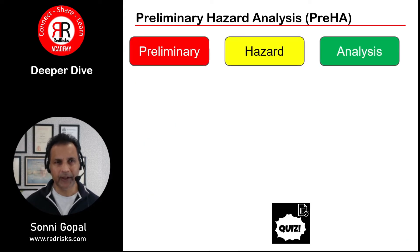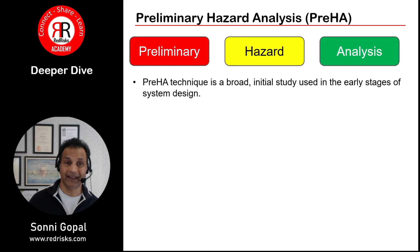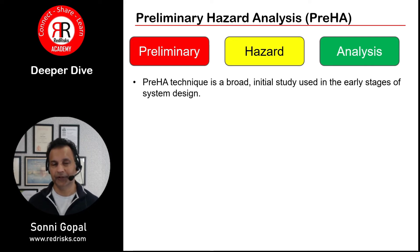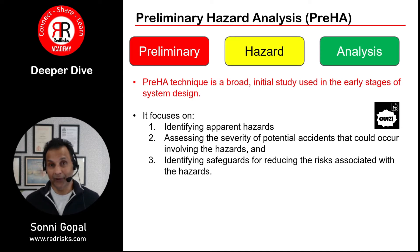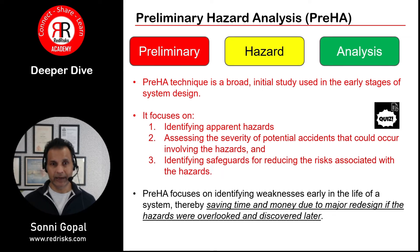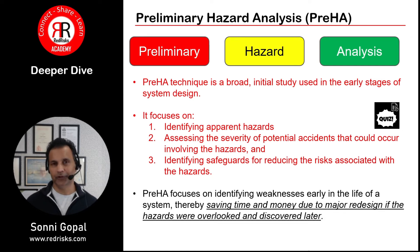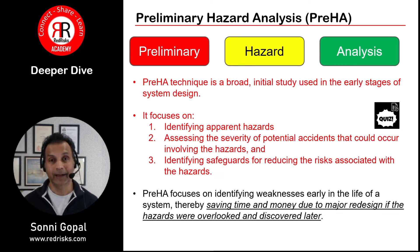Let's do a deeper dive on Pre-HA. The Pre-HA is a broad technique — an initial study using the early stages of a system design. It focuses on identifying apparent hazards, assessing the severity of potential accidents that occur involving those hazards, and identifying safeguards for reducing the associated risks. The Pre-HA focuses on identifying weaknesses early in the life of the system. What you don't want is to miss those and have to pick them up later, which is an incredible waste of resources, time, effort, and money.